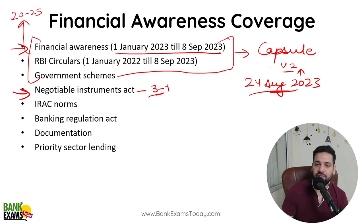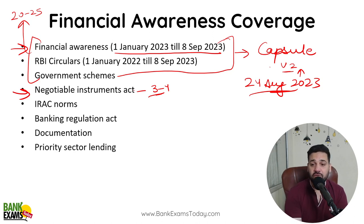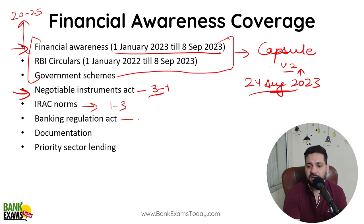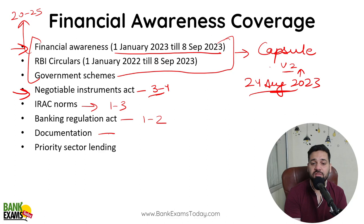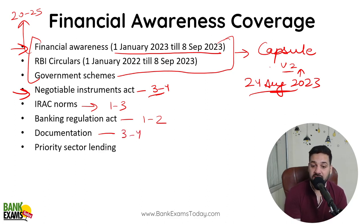You cannot expect that out of 40 questions, 35 will be easy. From Negotiable Instruments, expect 2-4 questions. IRAC Norms — 1-3 questions. Banking Regulation Act — 1-2 questions. Documentation — very, very important, every year there are 3-4 questions directly from it. Priority Sector Lending — every year there are 2-3 questions.